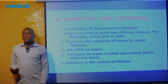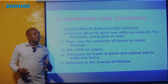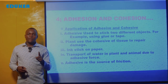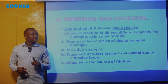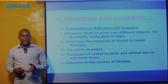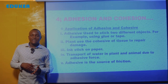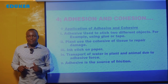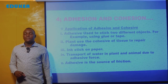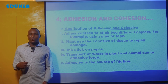We can take one object and another object, join them together and they stick firmly. The force responsible for this is what we call adhesion force. For example, you can take glue or tape and join objects — such as sticking a piece of paper on the wall or fixing something that is broken, using glue or tape.